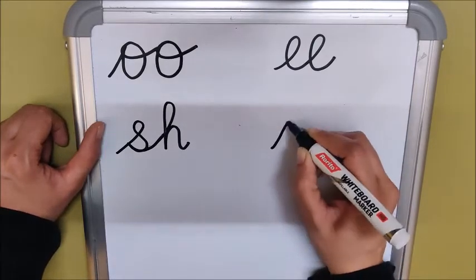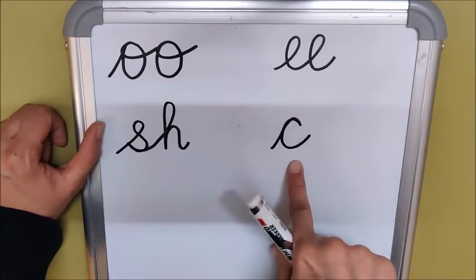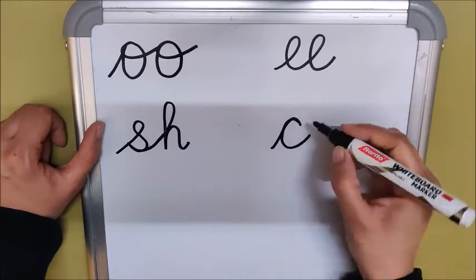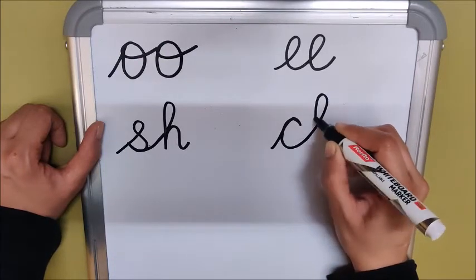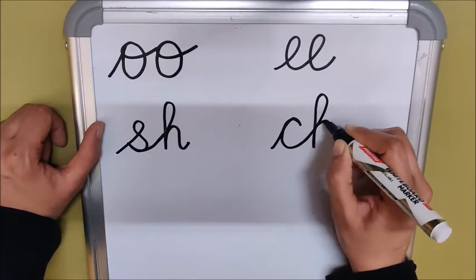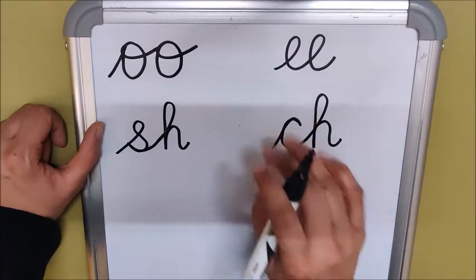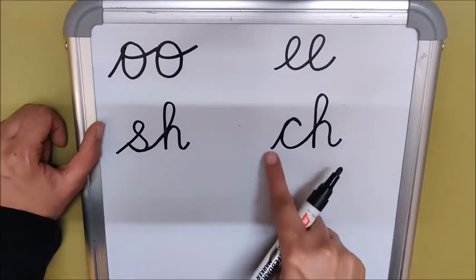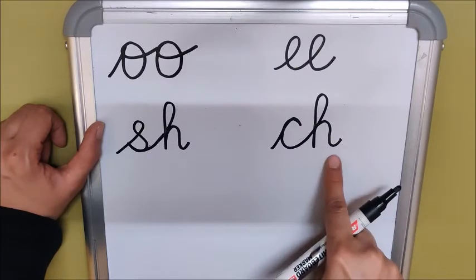Now next children, what is the sound of this letter? K. Now I am joining one more sound to it — I have joined 'her' with 'her'. Now what does it become? It has become Ch.